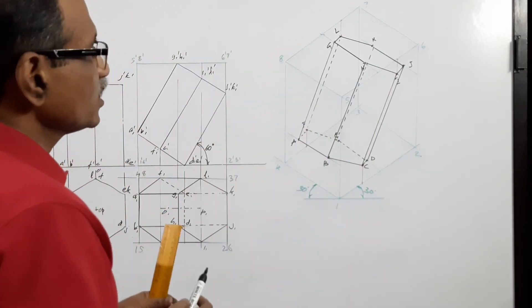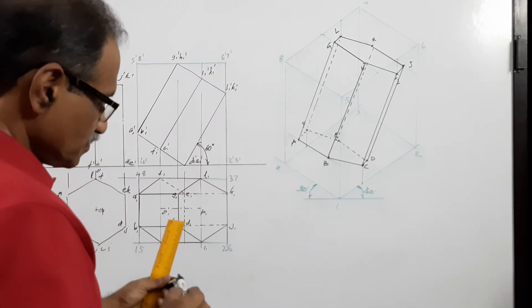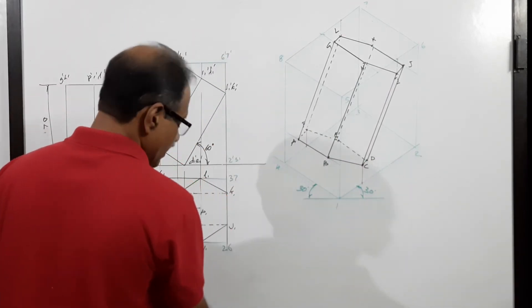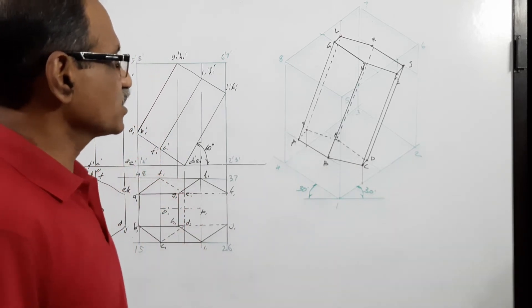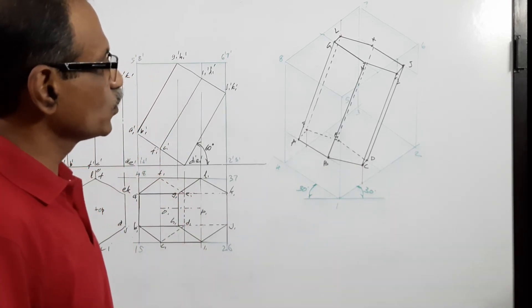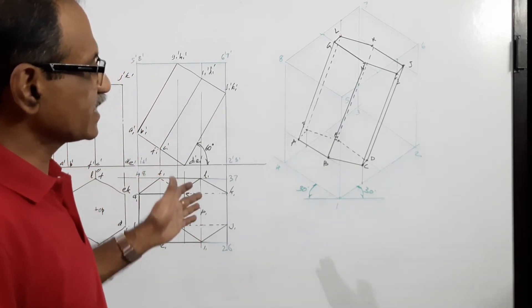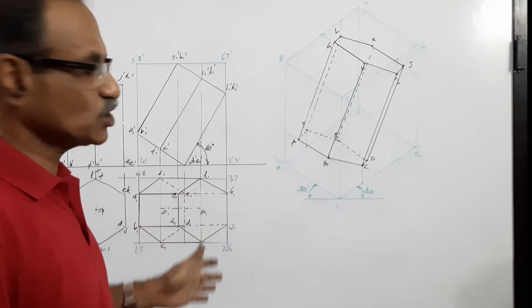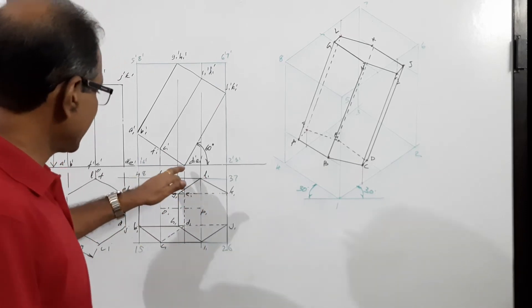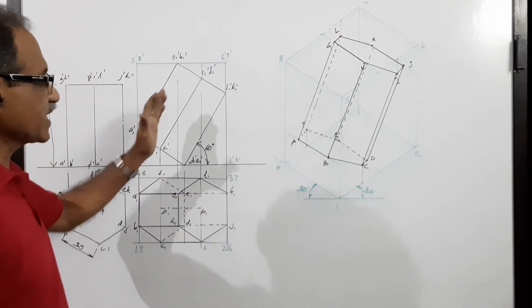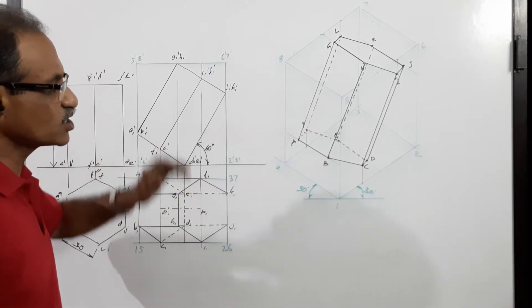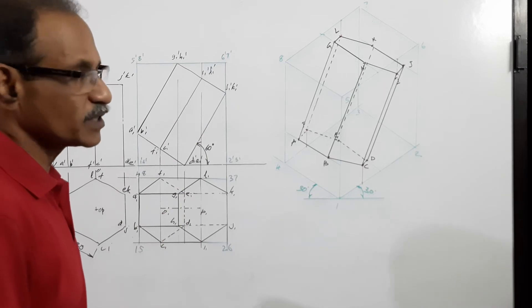This is the isometric view of the hexagonal prism that is resting on an edge with the rectangular face containing that edge making 60 degrees to HP.